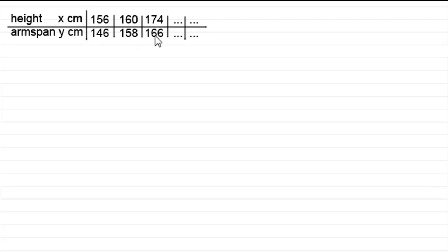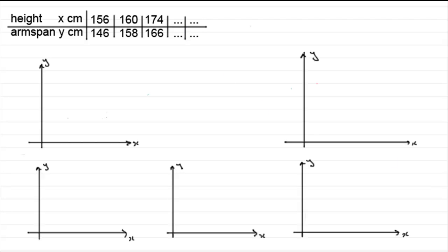And these are various values recorded from different people, and what we could do is we could plot this data on a scatter diagram, something like this. I've got several axes here as you can see, because as we progress through this tutorial I'm going to be drawing you different kinds of scatter diagrams.